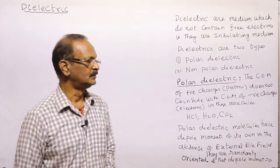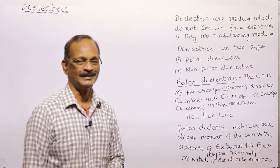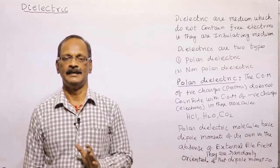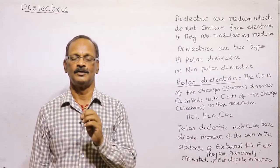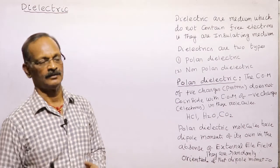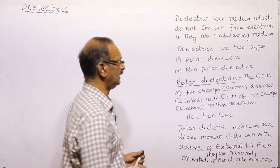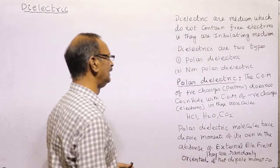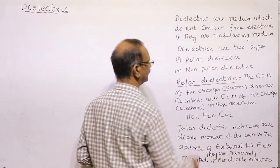Welcome students. Today we are going to discuss about dielectrics. A dielectric is basically an insulator — it does not have any free electrons. Dielectrics are of two types: polar dielectric and nonpolar dielectric.